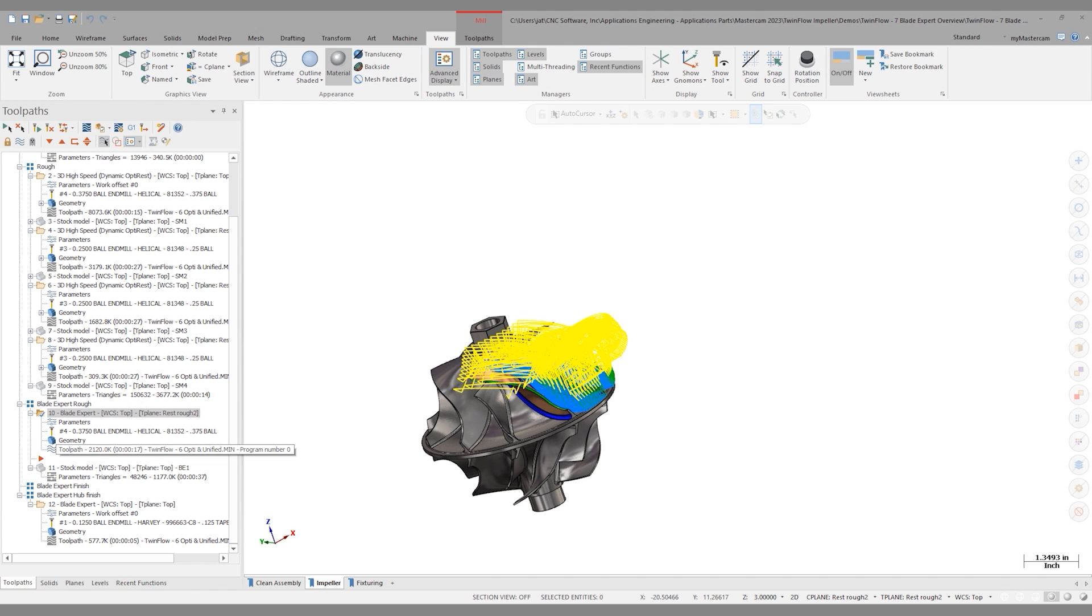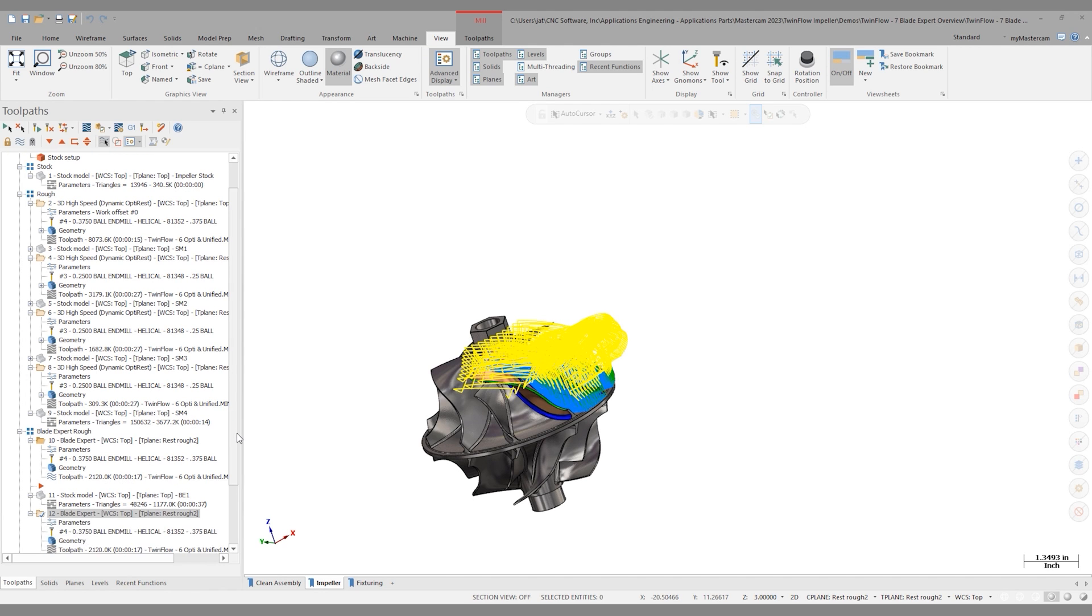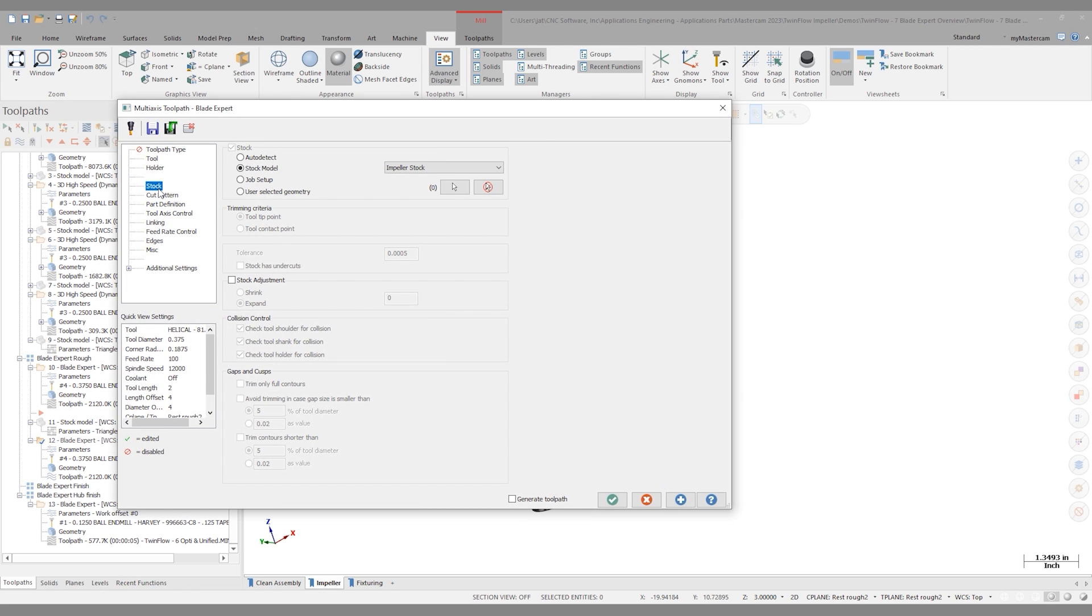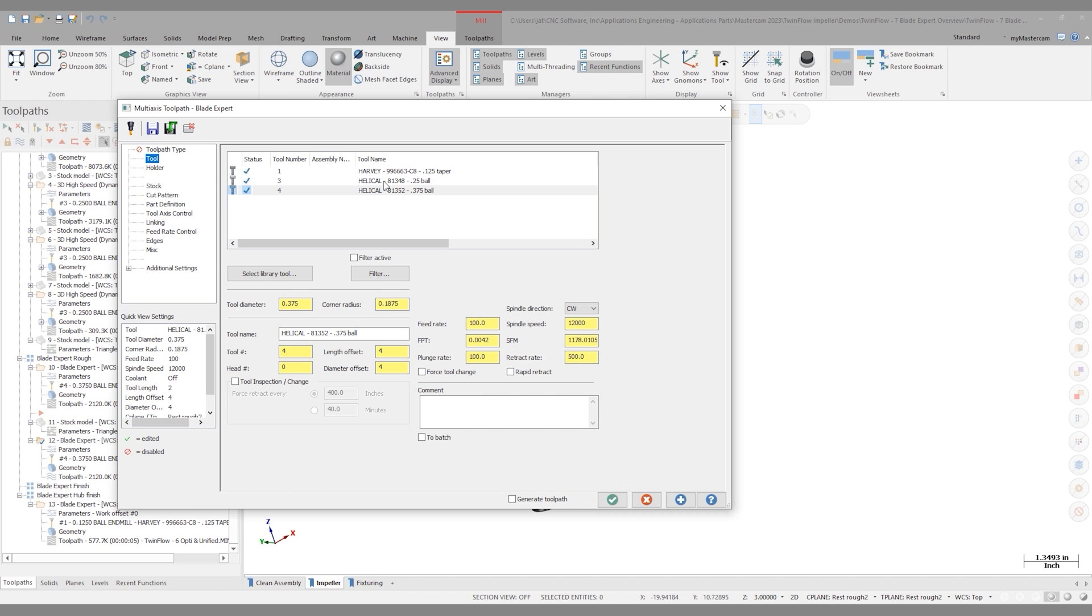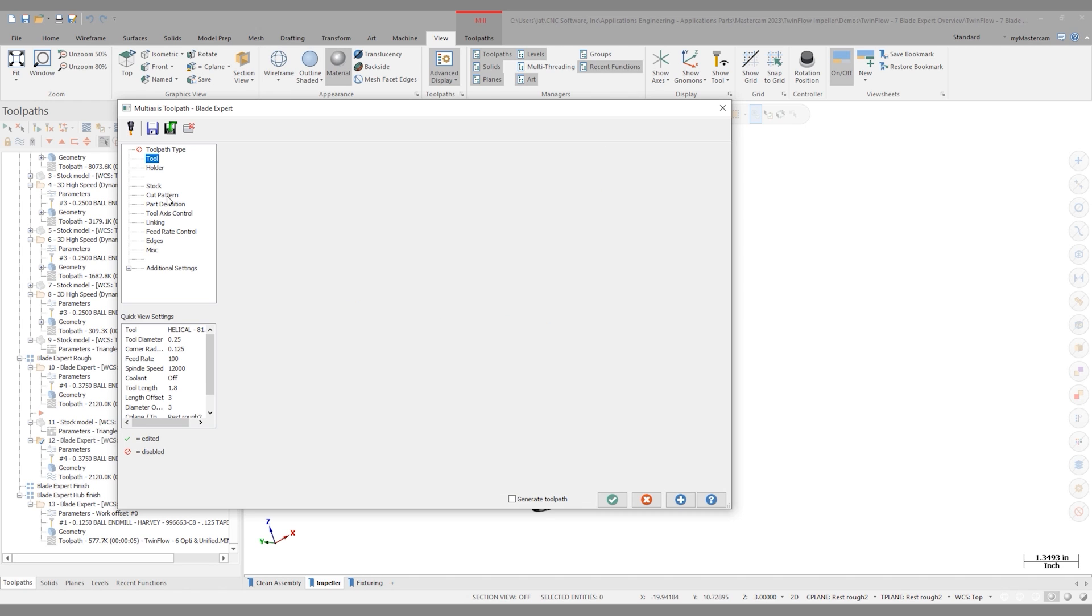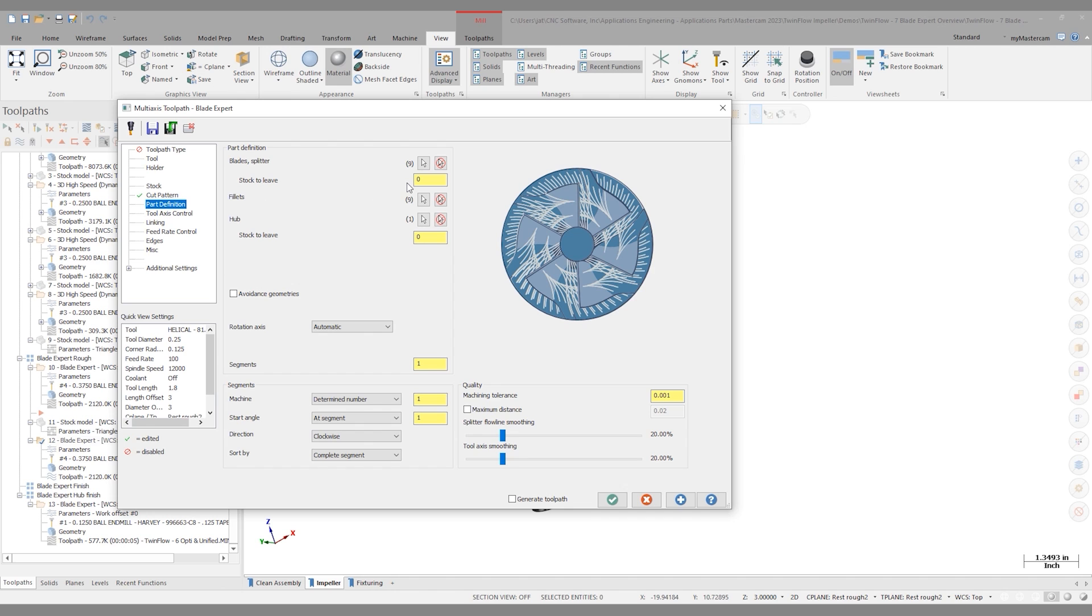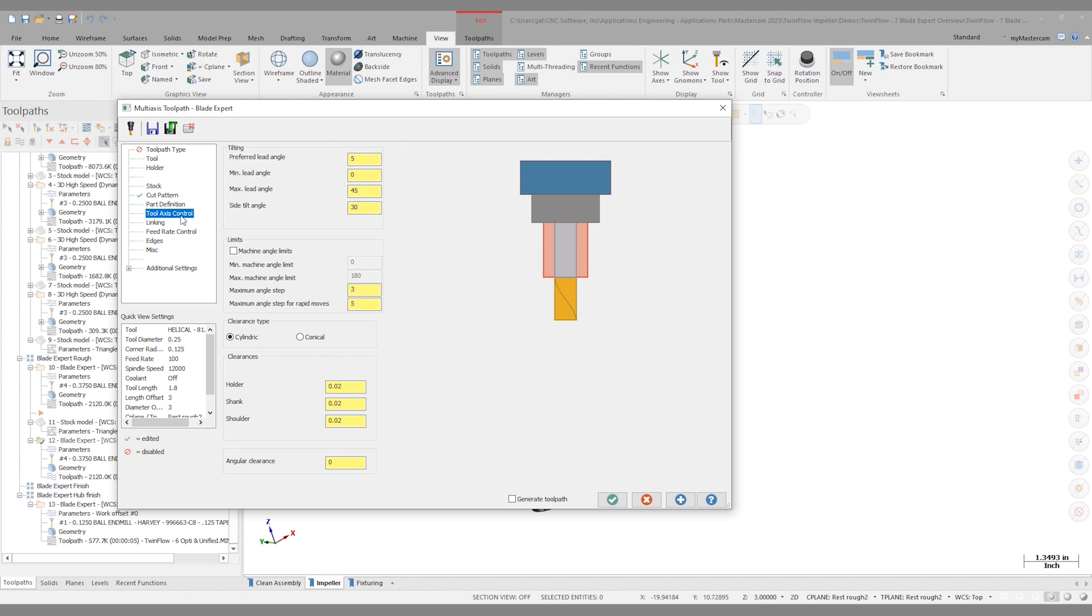We can now create a rest roughing operation with BladeXpert roughing. I'll go into the parameters. Go to the stock page and choose BladeXpert 1. That's the name of the stock model that we just regenerated. From here, I'll go to the tool page and downsize to the quarter inch ball end mill. I can leave the cut pattern the same with the exception of changing from right to left and come from the leading side. This is going to be going from the opposite side that the other one did. It allows some benefits for roughing on the machine. My part definition is going to stay exactly the same, and I'll leave my tool axis control page the same as well. I'll click Generate Toolpath and click OK.